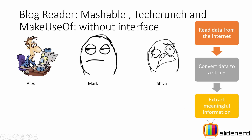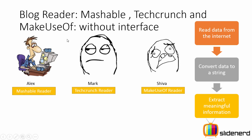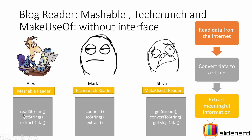Let's talk about what these three people are going to do individually. Alex is going to work on the Mashable Reader, Mark is going to work on the TechCrunch Reader, and Shiva is going to work on the MakeUseOf Reader. Alex writes methods like readStream, getString, and extractData. Mark writes the methods a bit differently, and Shiva writes the methods even more differently. Each of these methods does the same thing — for example, readStream, connect, and getStream all read data from the internet — but they have different names.